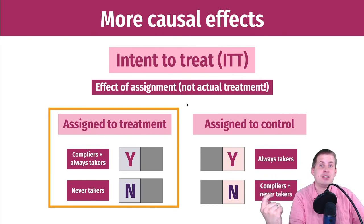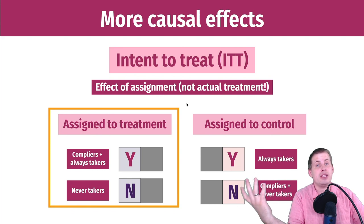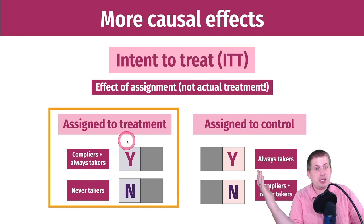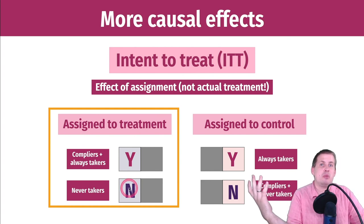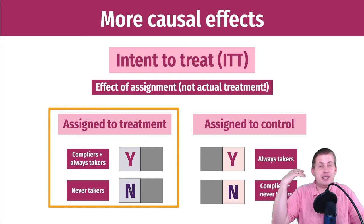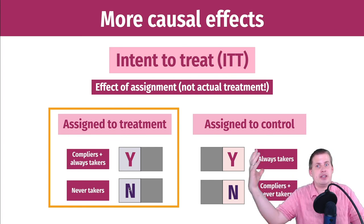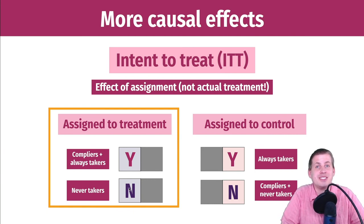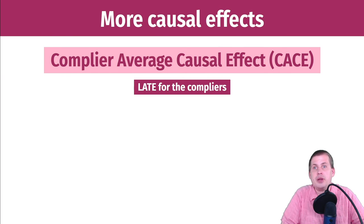The intent-to-treat effect doesn't really tell you whether the actual use of the program helped, because maybe they were assigned to treatment and didn't do it. All it's really saying is: does getting assigned to the treatment group have an effect? It gets rid of the distinction between compliers, always takers, and never takers, but it doesn't give you the complier causal effect.